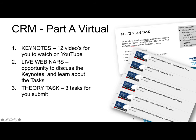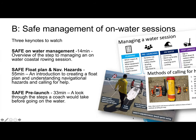The keynotes cover a certain amount of the curriculum, including the safe management of the on-water session. There are three videos in this section: an overview of the steps to managing an on-water coastal rowing session; a section on planning — the things you need to do and information you need to gather, including a float plan, understanding navigational hazards and methods for calling for help; and a pre-launch video covering tasks you'd do just before taking to the water, including dynamic risk assessment, safety checks, safety briefings, and signing out.